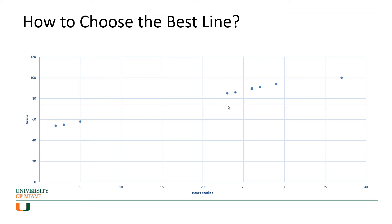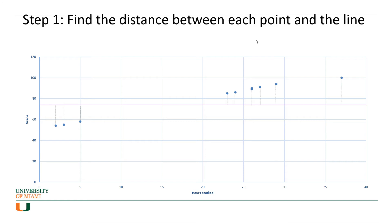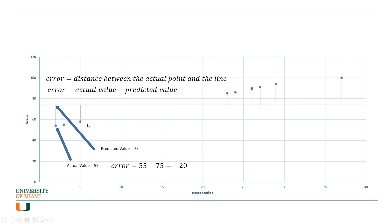Let's use this line to explain the OLS algorithm. The very first step is to find the distance between each of these points — remember, each point represents one observation: hours studied and grade — and the line. So you calculate the first distance, the second distance, and so on for this particular purple line.